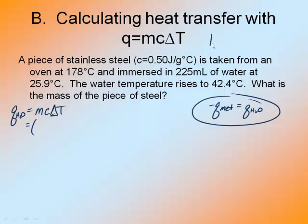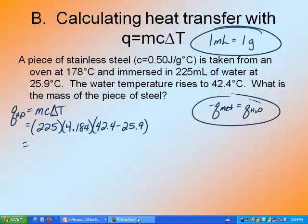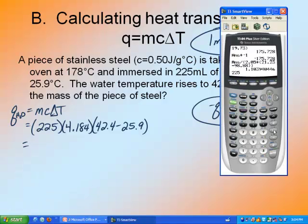Solve for my water first. Now remember that 1 milliliter of water is equal to 1 gram, but this is for water only. So 225 grams times its specific heat times its change in temperature. It ends at 42.4, it started at 25.9. They both end at the same temperature. 225 times 4.184, the specific heat of water, times the change in temperature, which is 42.4 minus 25.9, is 15533.1.